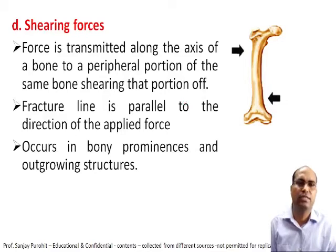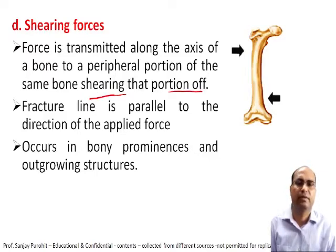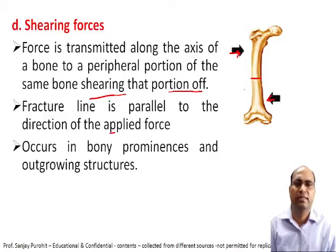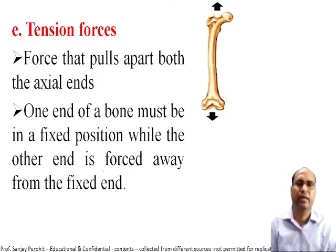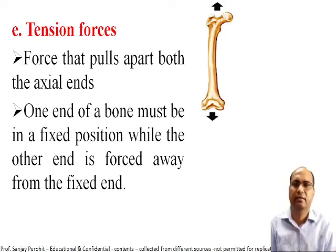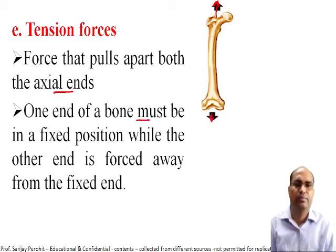Shearing forces are transmitted along the axis of the bone to the peripheral portion of the bone, shearing that portion off. The fracture line is parallel to the direction of the applied forces. This type occurs in bony prominences and outgrowths. Tension forces pull apart both the axial and other elements — one end of the bone must be in the fixed position while the other end is forced away from the fixed end.